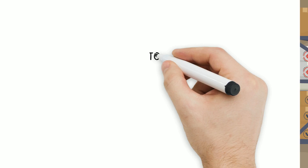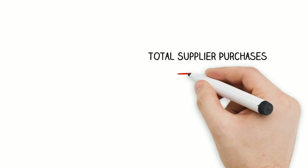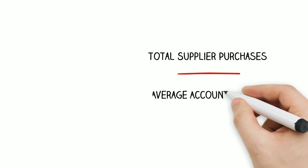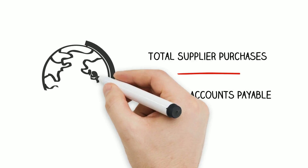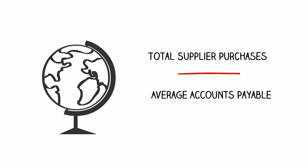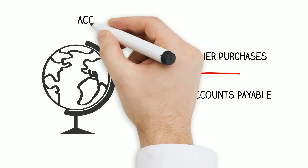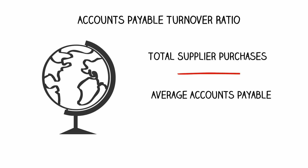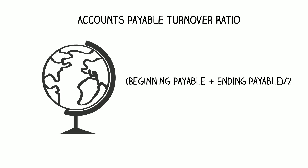Accounts Payable Turnover Ratio is calculated as the total supplier purchases over the average accounts payable. The average accounts payable is equal to the beginning accounts payable plus the ending accounts payable, divided by 2.